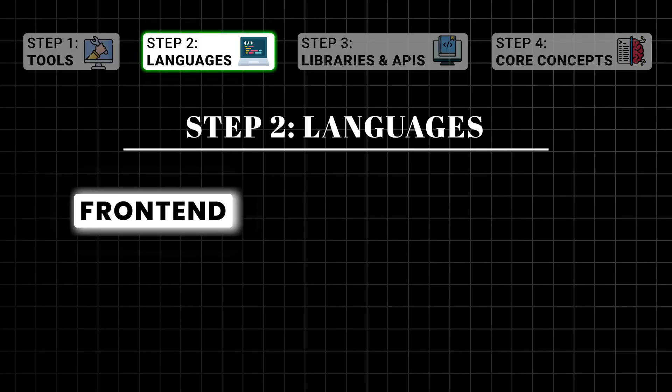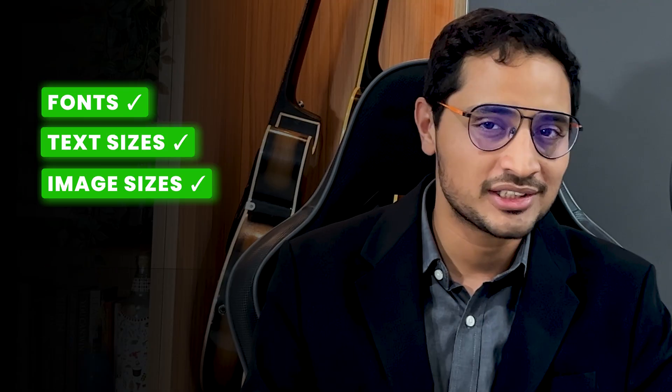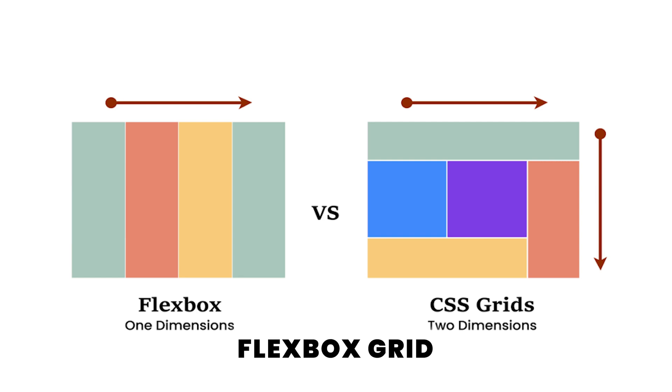Let's start with front-end languages. HTML lets you create the structure of web pages — think of it as the skeleton of your website. Once you understand the basics of HTML, you won't really care too much about them on a daily basis. CSS is used to style your web pages: that includes the font, the size of texts and images, the color, and all the visual elements on your screen.